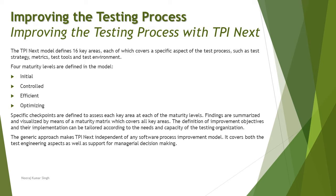In order to understand how TPI Next can be an alternative to improve your organization's process maturity: TPI stands for Test Process Improvement model. This TPI Next model defines 16 key characteristics which involve the improvement of the overall test process. Each of these covers a specific aspect, such as test strategy, metrics, test tools, and the environment.